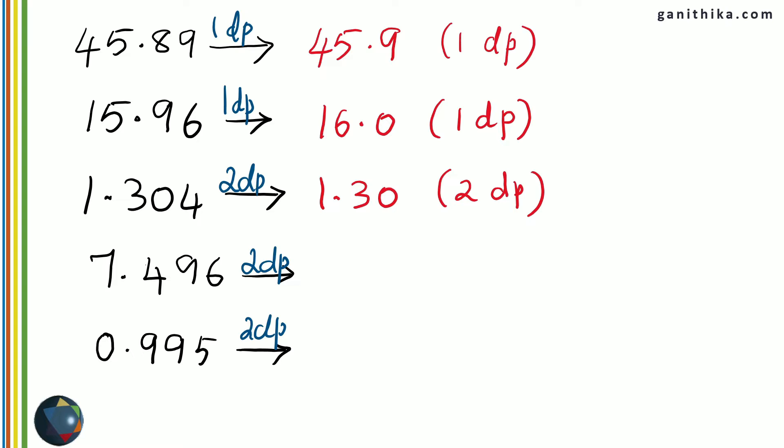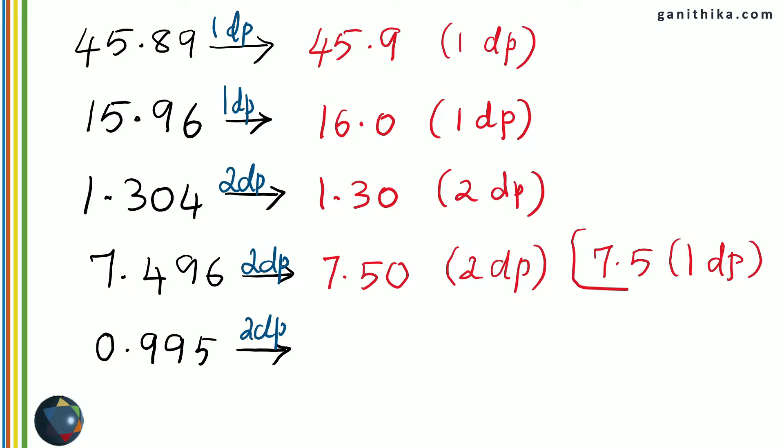7.496 rounded off to 2 decimal places: the third decimal place has a 6, which is more than 5. Therefore the 9 in the previous decimal place becomes 0 and the 4 becomes 5. So the answer is 7.50 to 2 decimal places — and you must write the 0 at the end to show you rounded off to that position. If asked for 1 decimal place, the answer would be 7.5 — you don't need the 0 there.